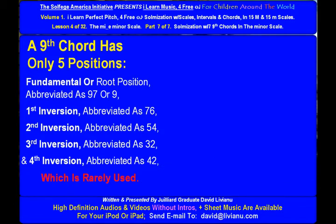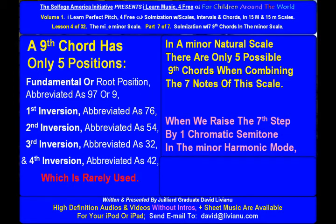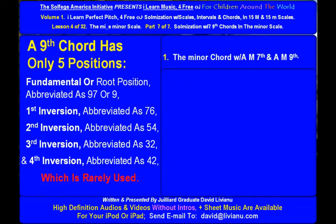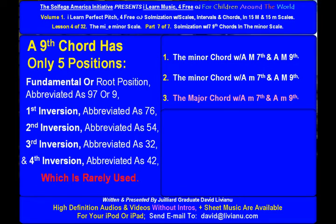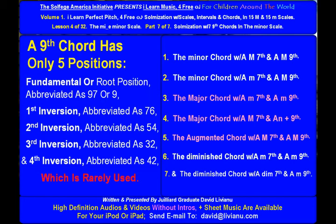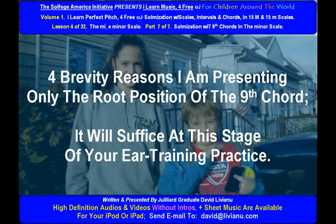In a minor natural scale, there are only 5 possible 9th chords when combining the 7th notes of this scale. When we raise the 7th step by one chromatic semitone in the minor harmonic mode to create more tonal relevant relationships, two more 9th chords are possible for a total of 7 9th chords: the minor chord with a major 7th and a major 9th, and the diminished chord with a minor 7th and a minor 9th. For brevity reasons, I am presenting only today the root position of the 9th chord. It will suffice at this stage of your ear training practice.